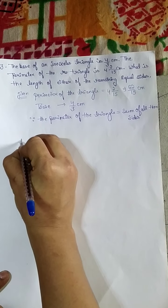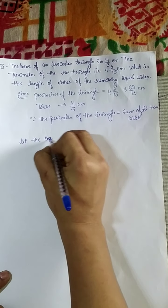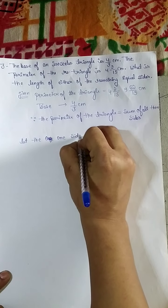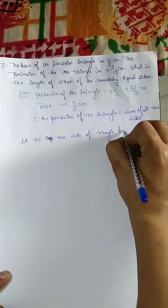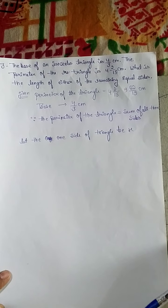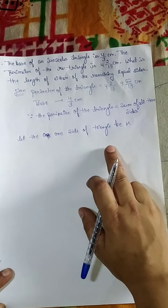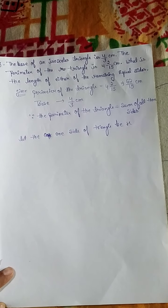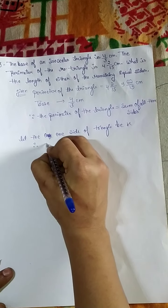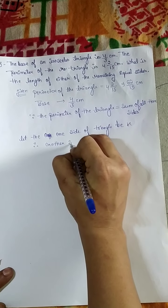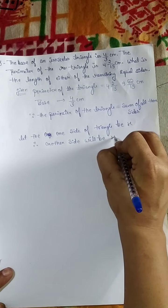Let one side of the triangle be X. Since this is an isosceles triangle and two sides are equal, if one side is X, then the other equal side will also be X.